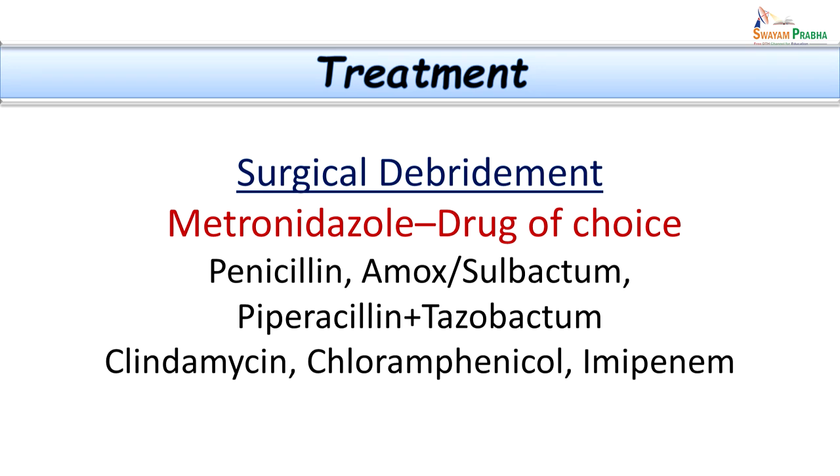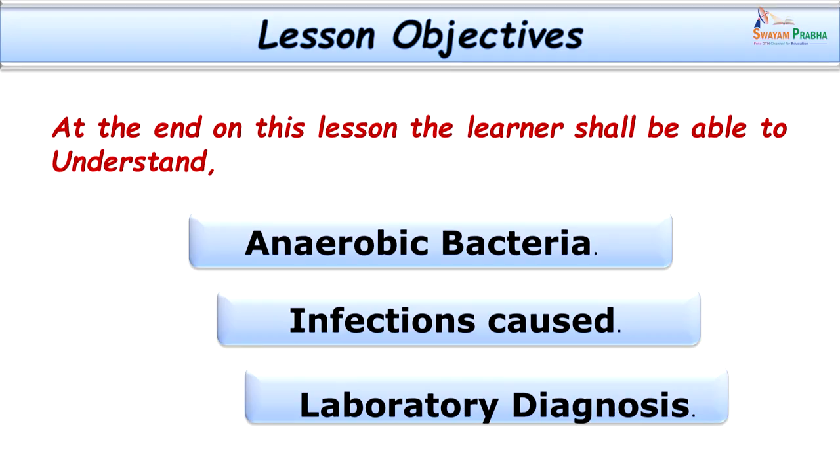Surgical debridement is important for fast recovery. With this, we have considered a case and discussed anaerobic bacteria under all these headings. We have achieved the lesson objective — learning in detail about anaerobic bacteria, the infections caused, and laboratory diagnosis. These are some references for the pictures used in this class. Thank you very much.